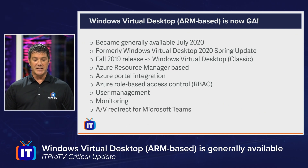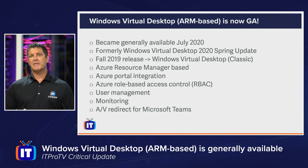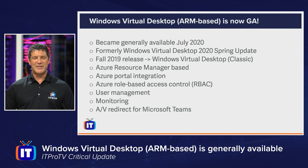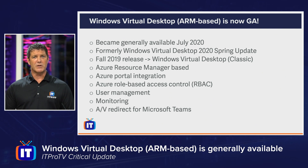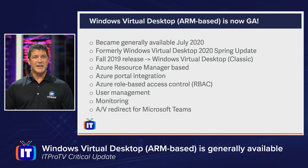Another big change is integrated AV redirect for Microsoft Teams. One of the big problems with Windows Virtual Desktop was that remote workers wanting to make Teams calls were putting too much workload on those virtual desktops — resulting in choppy graphics, choppy audio, things like that. With AV redirect, the audio-visual processing for Microsoft Teams calls is handled through the local client, so we no longer have that workload on the virtual desktops. It makes for a much smoother experience — you wouldn't even know you were on a virtual desktop during your Teams call.